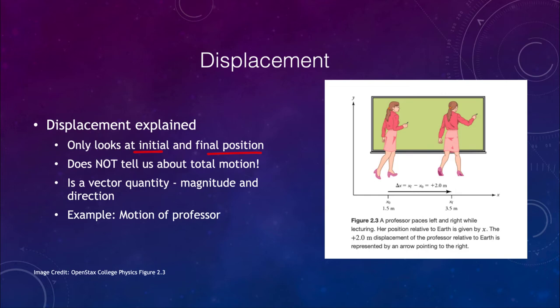What we have to explain displacement is that again, it looks only at the initial and final position. It does not tell us about the total motion. So in our image here, you could have a professor walking back and forth over the course of a lecture in front of a blackboard. And as they do that, they may walk a large distance.